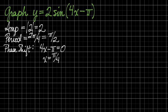And to solve this equation is pretty easy. Add pi, divide by 4. So this graph is going to begin at pi over 4. That's where I'm going to start drawing. So that's the phase shift.